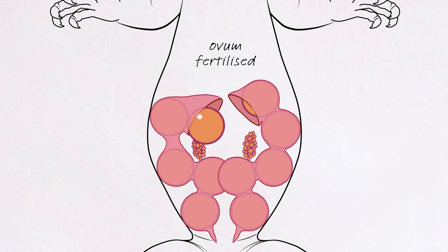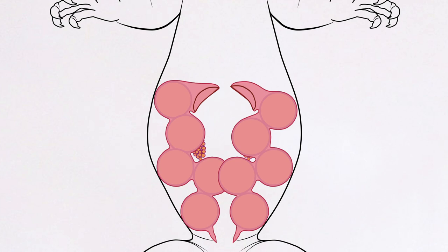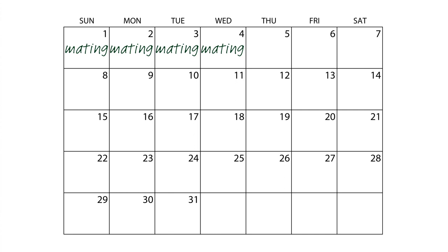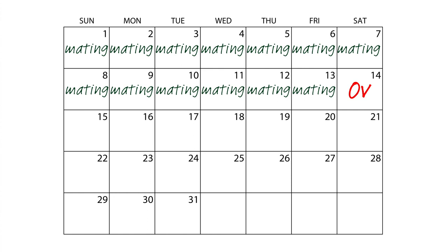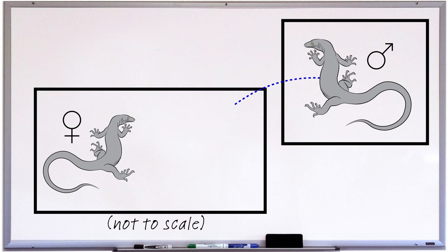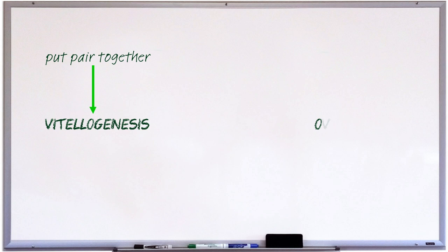So why is this an important reproductive stage to understand, recognise, and detect in a female monitor? For starters, ovulation signals the end of mating. Usually a pair will have stopped mating a fair while before ovulation occurs, but sometimes it continues right up to the point the female ovulates. Once the female ovulates, mating usually comes to a complete halt. This means that if you want to separate your monitor pair after mating, ovulation is a good point at which to remove the male. Vitellogenesis and ovulation are bookends to the mating process.